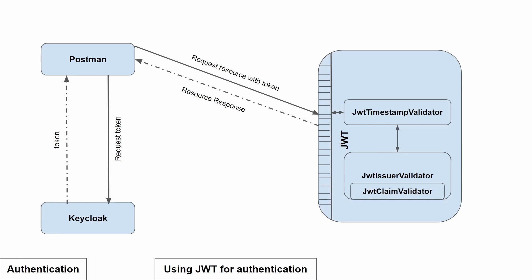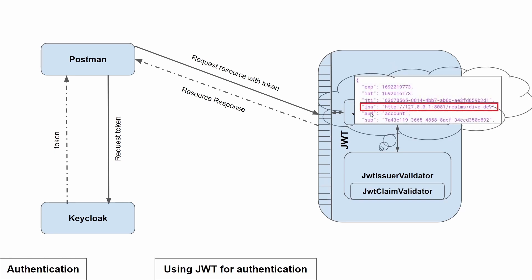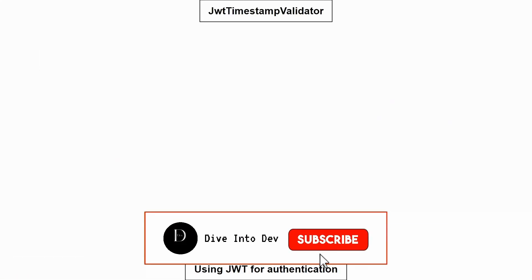If the token is valid, the next validator is called: the JwtIssuerValidator. This JwtIssuerValidator uses a JwtClaimValidator. What basically happens is there is a property called 'iss' (issuer) in the access token. The value of this issuer is cross-checked with the issuer defined within the Spring Boot application. If they match, it is a success; if not, the claim validator sends an error message saying the issuer is invalid.